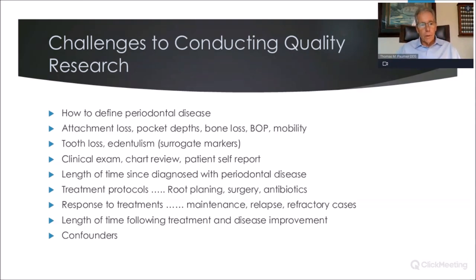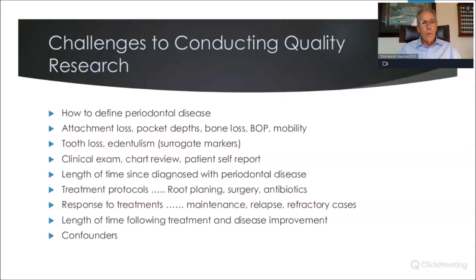There are a lot of challenges to conducting quality research to determine associations, links, and even causality between oral pathogens and systemic diseases. First and foremost: how do we define periodontal disease in research? Not just by AAP or European Periodontology definitions, but how do we define it when correlating it with systemic disease? Do we look at attachment loss, pocket depths, bone loss, bleeding on probing, or mobility? All of those have been used in research.